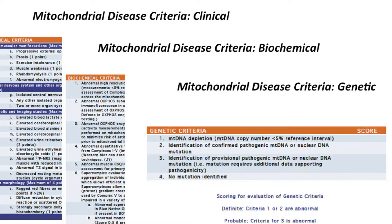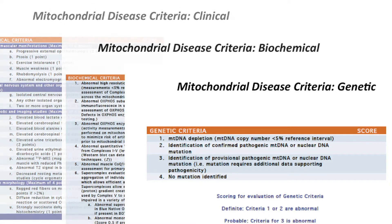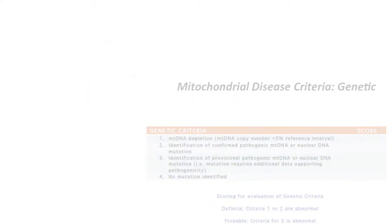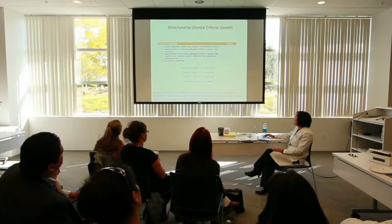In fact, there are over 1,400 different genes that impact the function of mitochondria. So across the clinical, biochemical, and genetic criteria, scores are calculated, and then based on scores, a diagnosis of possible, probable, or definitive mitochondrial disease can be made.